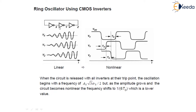When the circuit is realized with all the inverters at their trip point, the oscillation begins with a frequency of A0 times root 3 times omega_0 divided by 2. But as the amplitude increases, the circuit becomes non-linear and the frequency shifts to 1 upon 6·Td, which is a lower bound. In this ring oscillator using a CMOS inverter, the oscillations begin at A0·√3·ω0/2, and as the amplitude increases and becomes more non-linear, the frequency shifts to 1 upon 6Td.